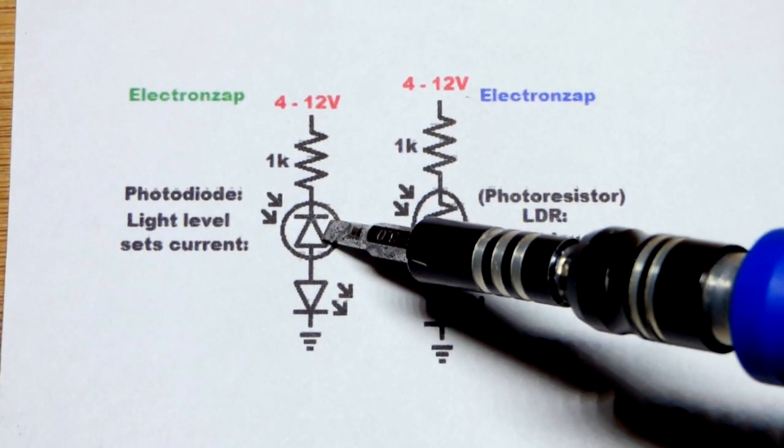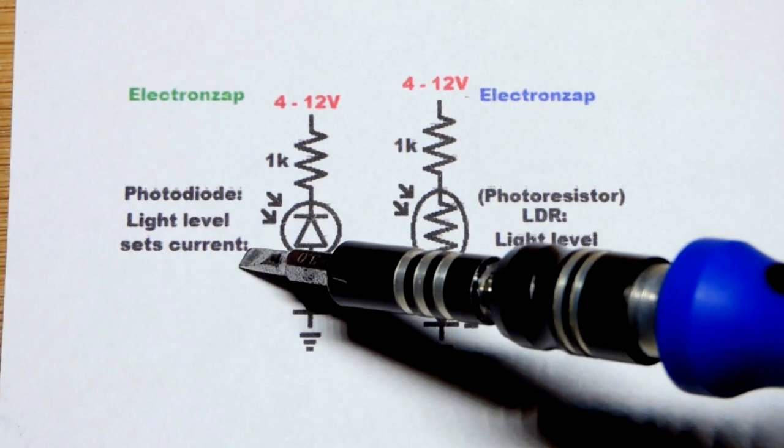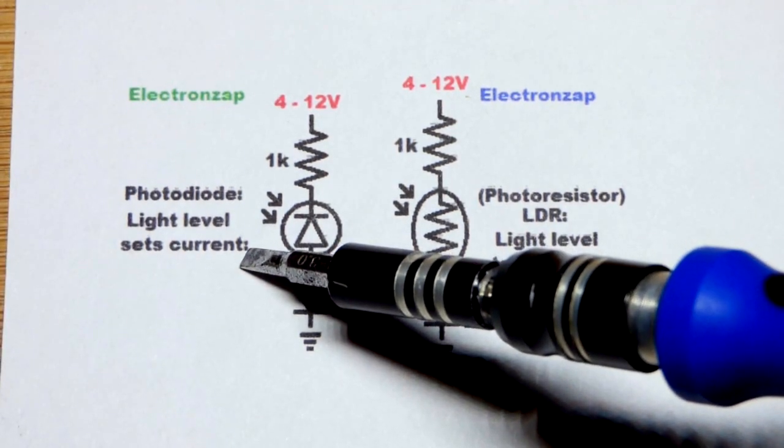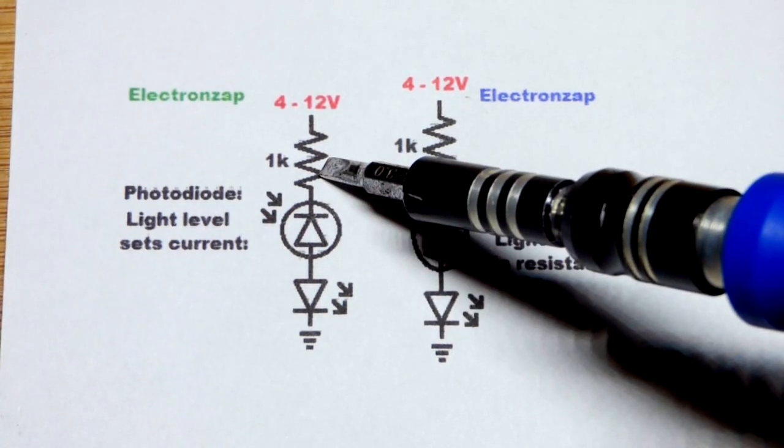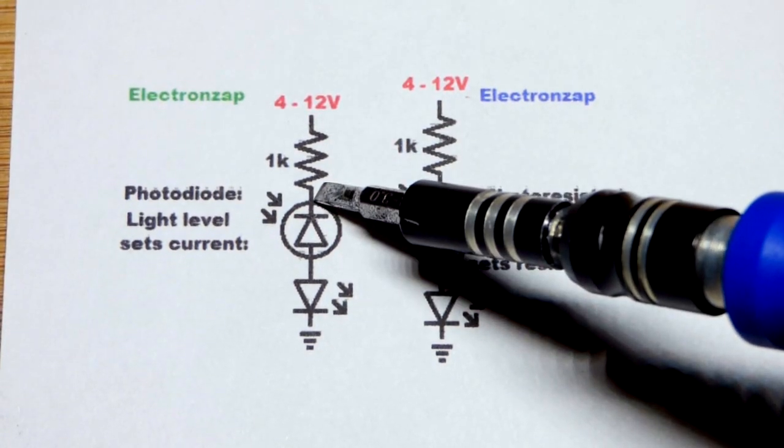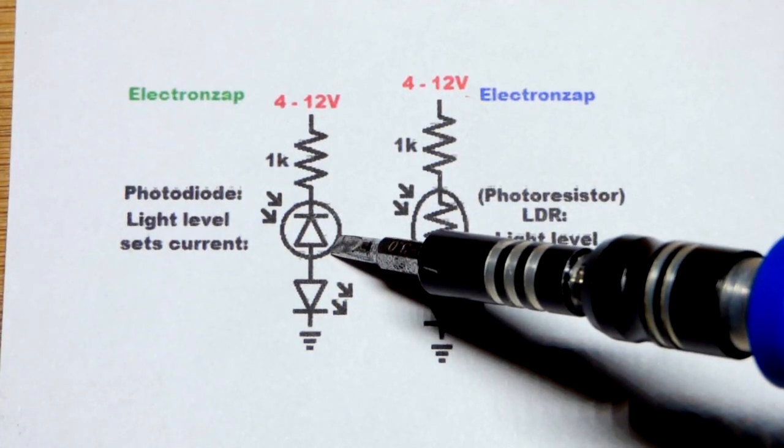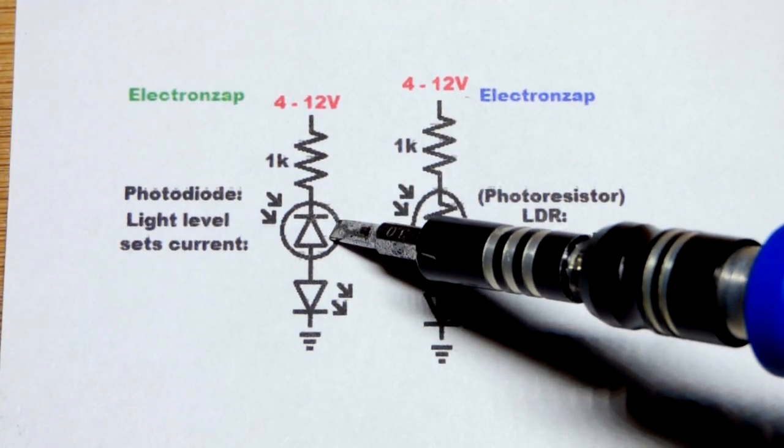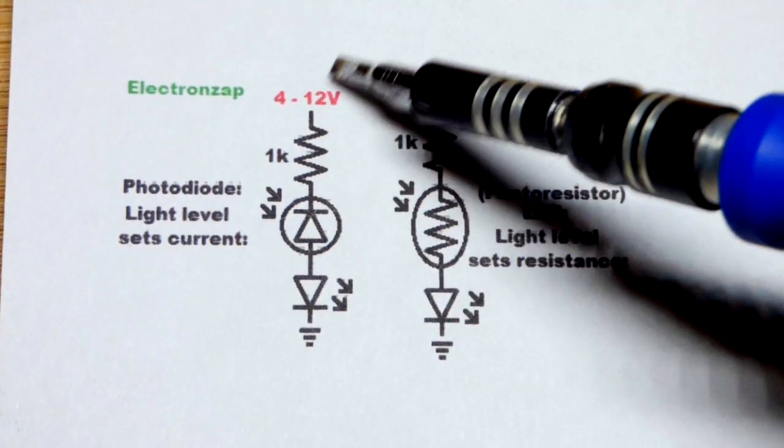Based on how much light is falling on the photodiode, it's going to let a certain amount of current go through it. Just in case we were able to get it bright enough, I'm going to also put a 1 kiloohm resistor in series with it. It'll also help us compare the two circuits. It lets a specific amount of current through it based on how much light is falling on it.